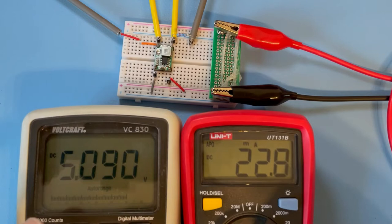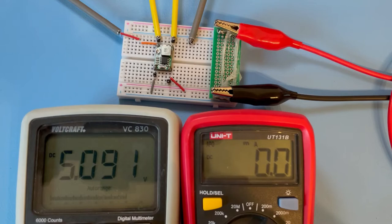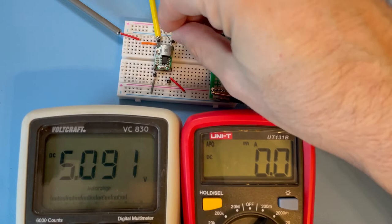We go to 100 ohm which must then yield around 50 milliampere. And stable as always.